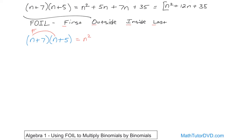Next, multiply the outside terms — those are the terms on the outer edges of the whole expression. n times 5 gives you 5n. Then multiply the inside terms — those are close to each other in the middle. 7 times n gives you 7n. Finally, multiply the last terms — the last term of each binomial. 7 times 5 is 35.